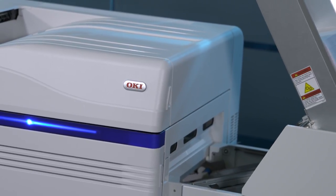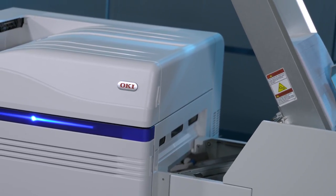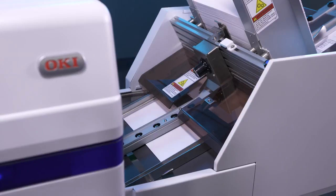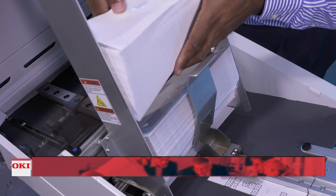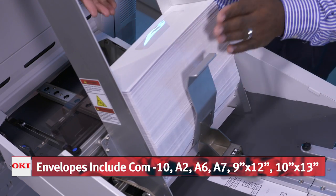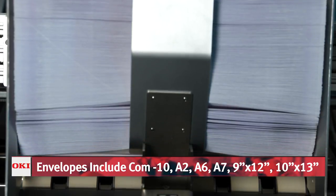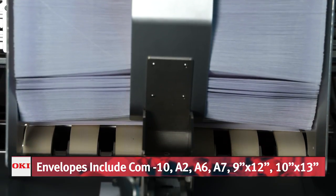Okie's high-definition color LED engines support a wide range of media, made possible by the straight-through print path that handles card stock up to 360 GSM. The DP Plus Feeder easily supports envelope sizes from A2 through A7, as well as 9x12s and 10x13s.